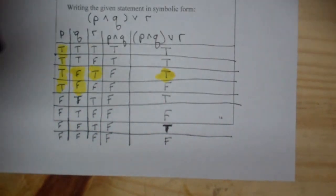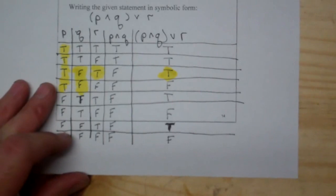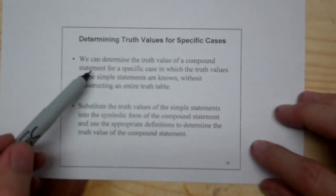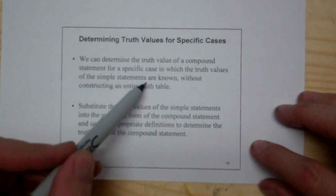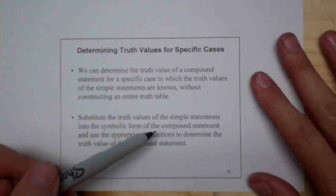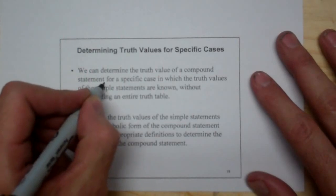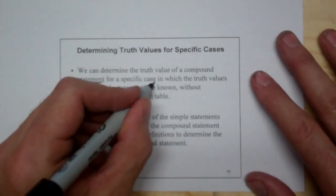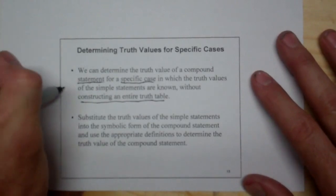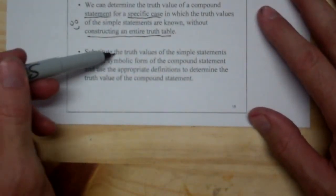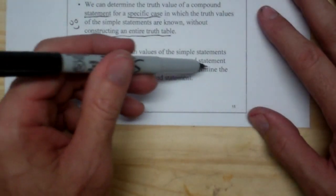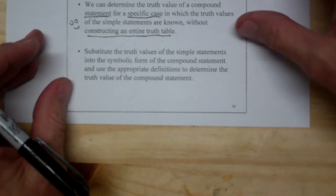We can determine the truth value of a compound statement for a specific case without constructing an entire truth table. We substitute the truth values of the simple statements into the symbolic form of the compound statement and use the appropriate definitions to determine the truth value. This saves us a lot of work.